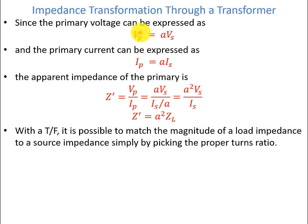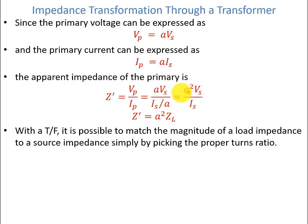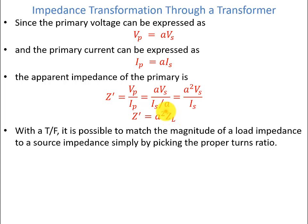On the secondary side, ZL = VS/IS. The apparent impedance of the primary circuit is Z′ = VP/IP. Since VP = a·VS and IP = IS/a, we get Z′ = (a·VS)/(IS/a) = a²·VS/IS = a²·ZL. So Z′ equals a-squared times ZL. With a transformer it is possible to match the magnitude of a load impedance to a source impedance simply by picking the proper turns ratio — the input impedance equals a² times the load impedance.